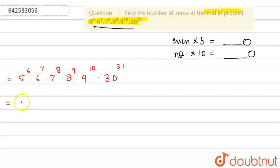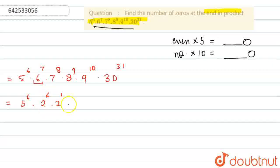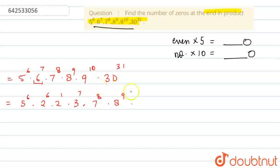Now, 6 to the power 7 — we can write it as 2 to the power 6 times 2 to the power 1, so this will be 2 to the power 7, times 3 to the power 7. So this whole term becomes 6 to the power 7. Into 7 to the power 8, into 8 to the power 9, into 9 to the power 10, into 30 to the power 31.